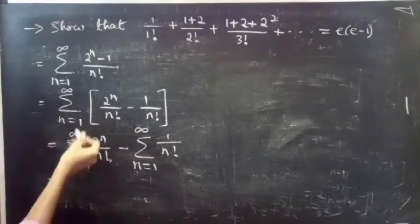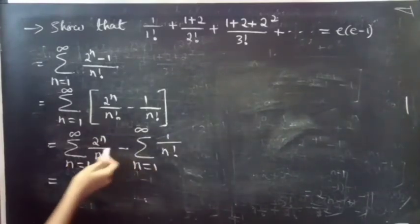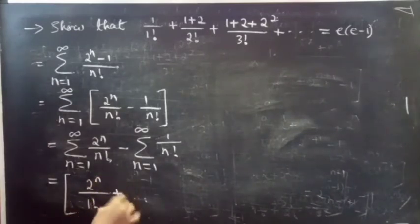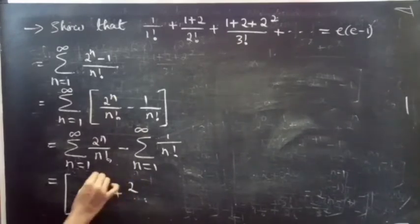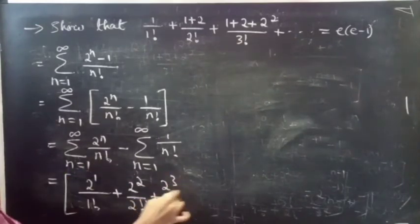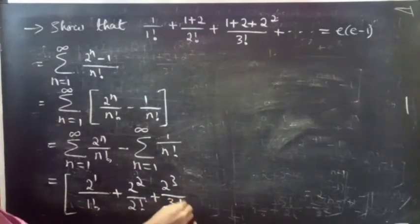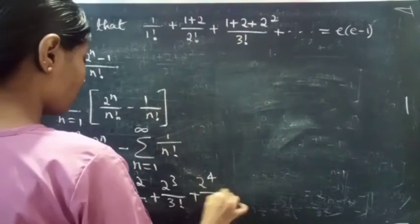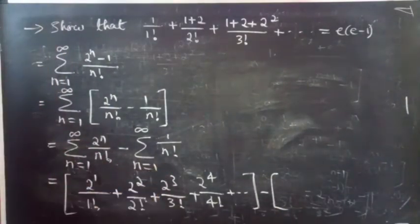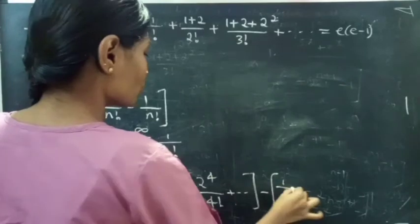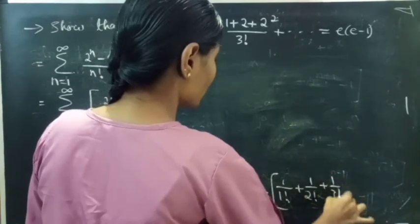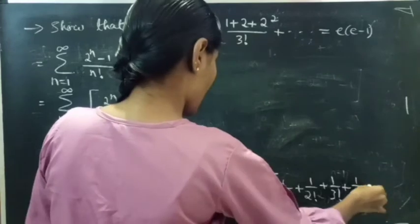Substituting for n equals to 1 to infinity in the first summation, you get 2 power 1 by 1 factorial, plus 2 squared by 2 factorial, plus 2 cubed by 3 factorial, plus 2 power 4 by 4 factorial and so on. For the second summation, you get 1 by 1 factorial, 1 by 2 factorial, 1 by 3 factorial, 1 by 4 factorial, and so on.